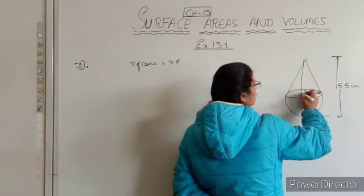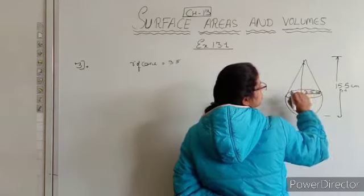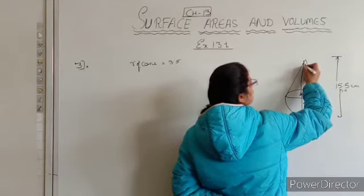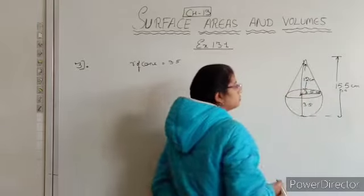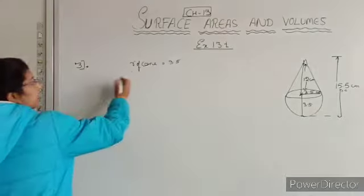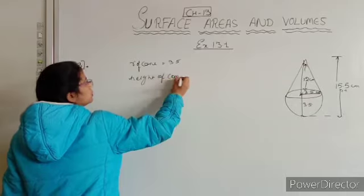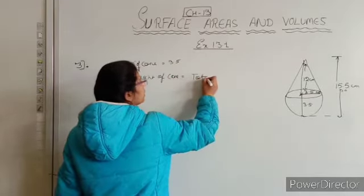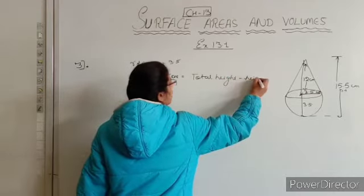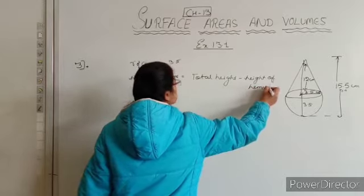We can find the height of the cone. The hemisphere radius is 3.5 cm, so the height of the cone equals total height minus the radius of the hemisphere: 15.5 minus 3.5 equals 12 cm. So the height of the cone is 12 cm.